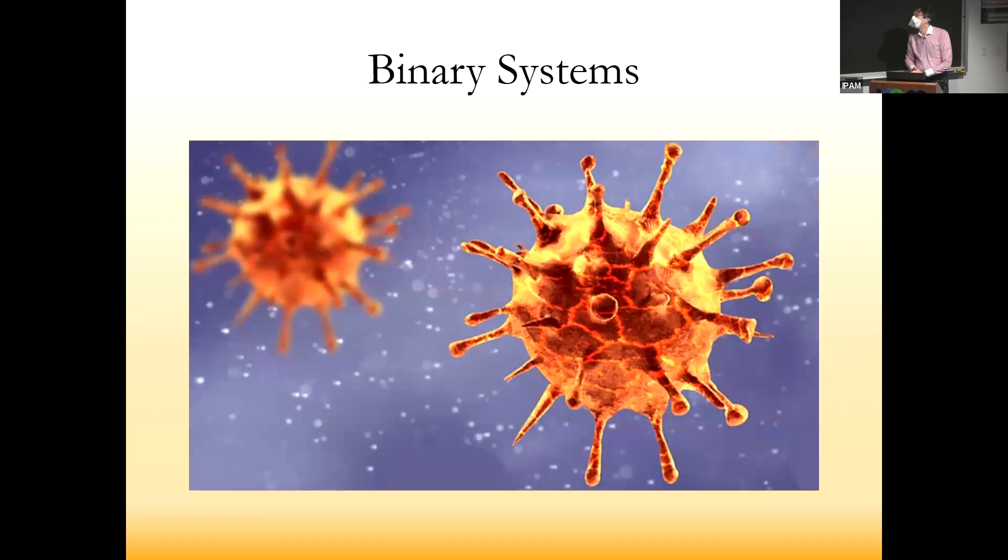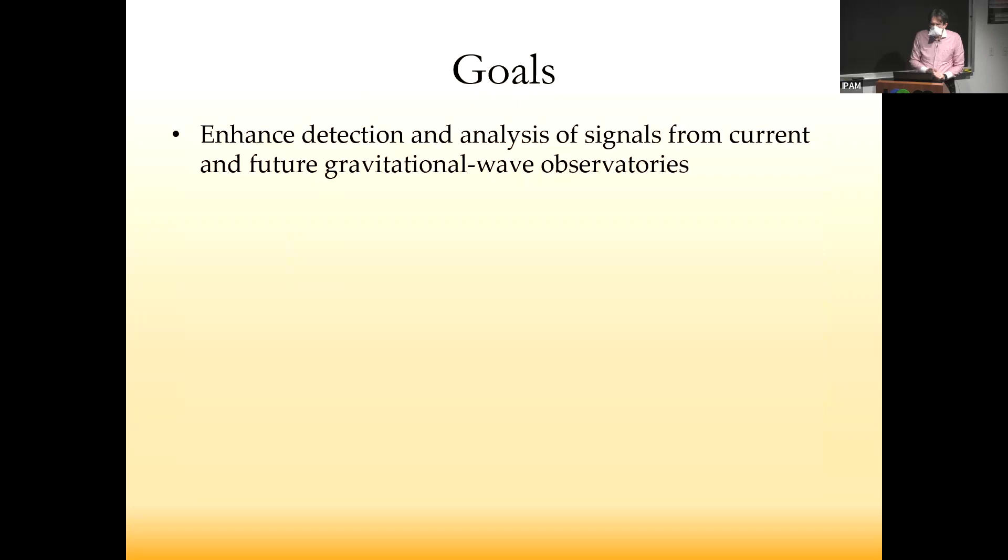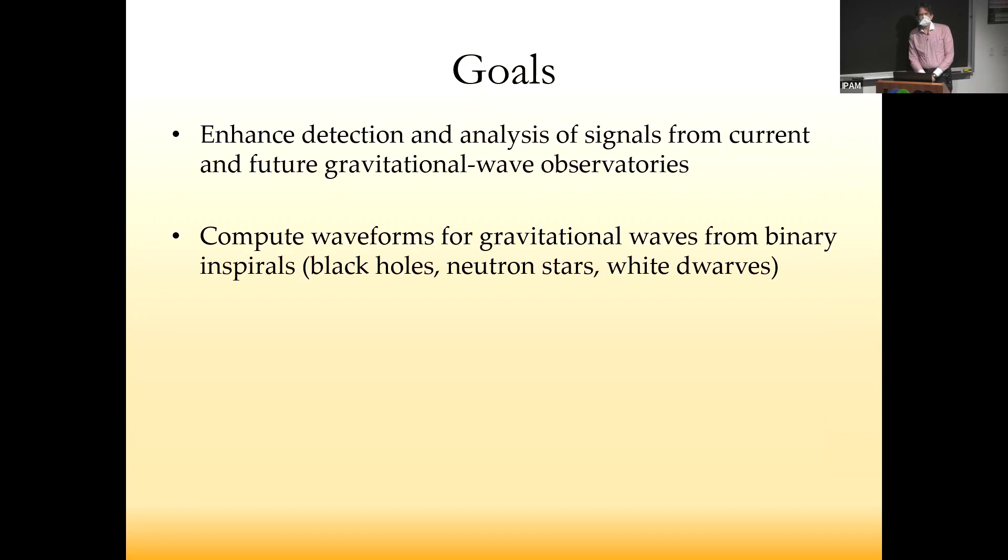For inspiration, we have our favorite binary system of the moment, Omicron and Delta. Our goals, as you've heard from previous speakers, are to enhance the detection and analysis of signals from current and future gravitational wave observatories. In particular, we need to compute waveforms for gravitational waves from binary inspirals, which might be black holes, neutron stars, or white dwarves. These are all bound states.